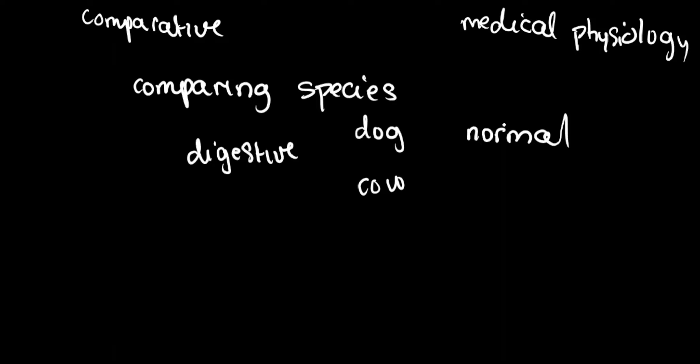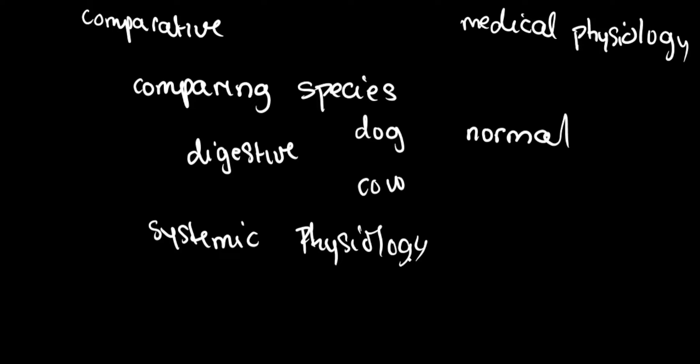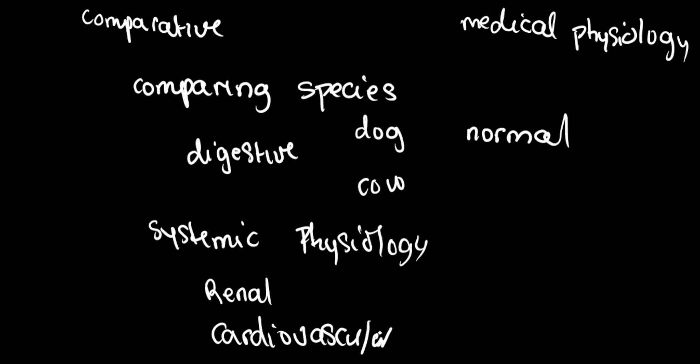Another branch is systemic physiology, which has to do with studying the functions of systems. So systemic physiology deals with the study of different systems that make up the body, such as renal physiology, cardiovascular physiology, and so on — basically studying the systems that make up a particular living organism.